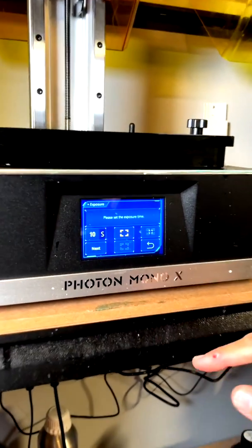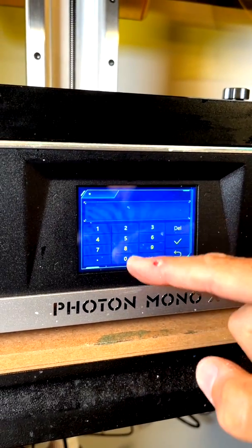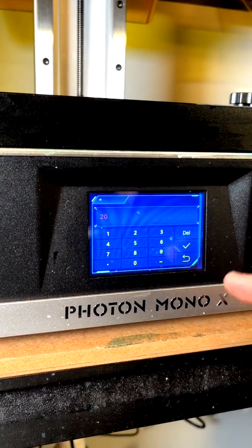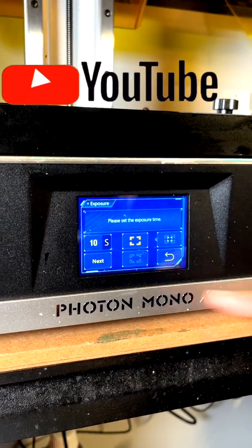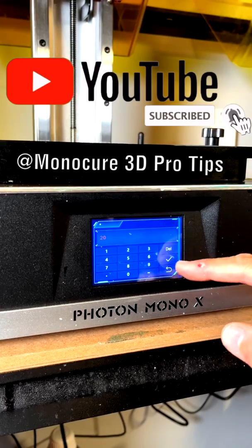So if we go into the exposure option, select say about 20 seconds depending on the resin that you've got in there. It'll be a little bit less than the exposure that you would use for base layers.